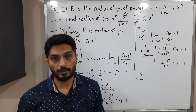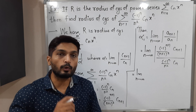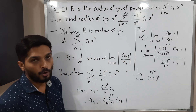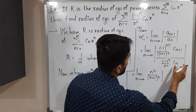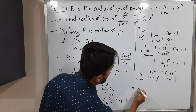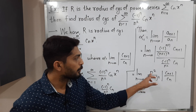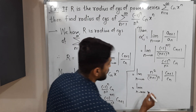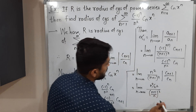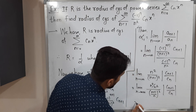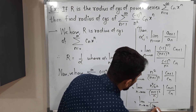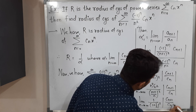Since n² is in the denominator of the denominator, it moves to the numerator, giving us n² / (n+1)² · |cₙ₊₁ / cₙ|. Dividing numerator and denominator by n², we get: limit as n tends to infinity of 1 / (1 + 1/n)² · |cₙ₊₁ / cₙ|.